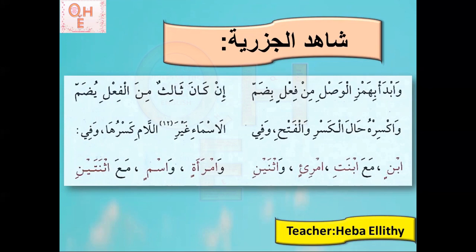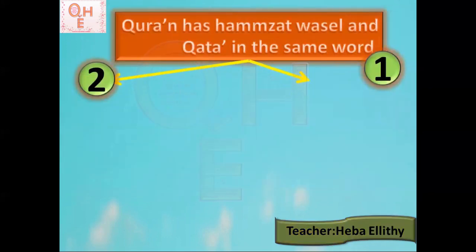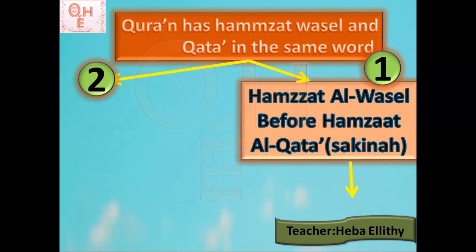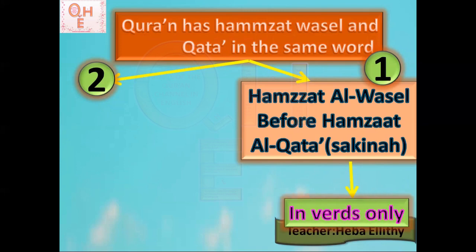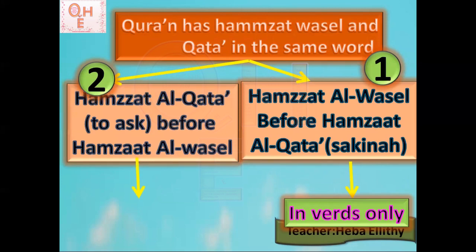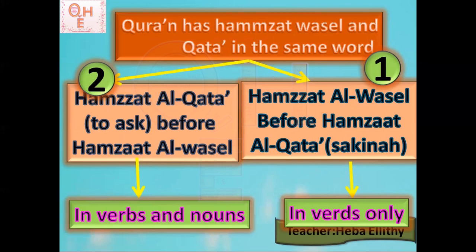Today, insha'Allah, we will go through more details, and we will see that the Quran has Hamzat al-Wassl and Hamzat al-Qata in the same word. There are two cases where we can see this. Case one occurs in verbs only. Case two is when we use Hamzat al-Qata to ask a question before Hamzat al-Wassl, and we can find it in verbs and nouns.